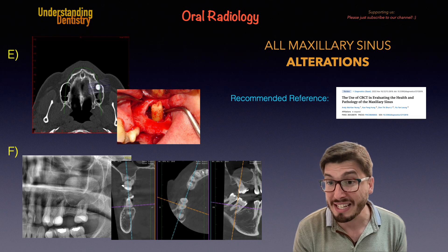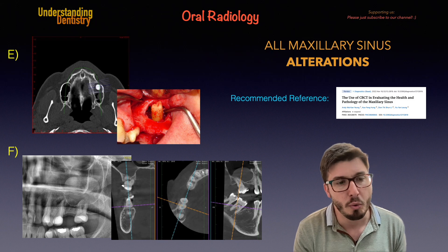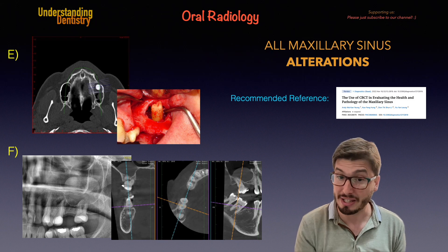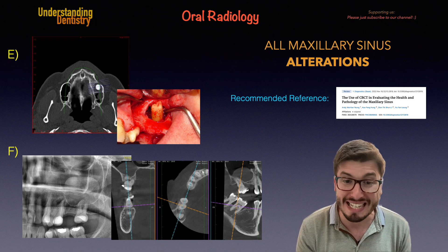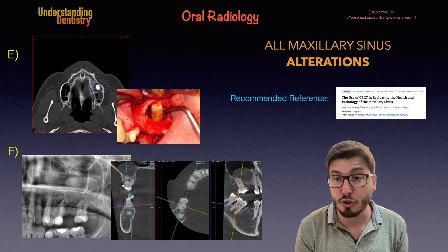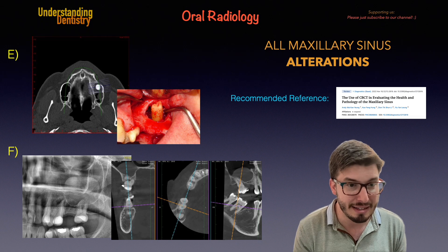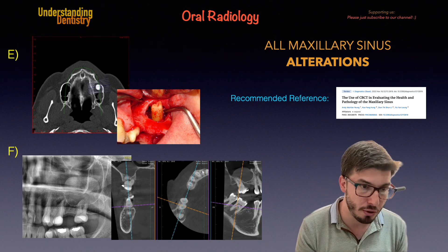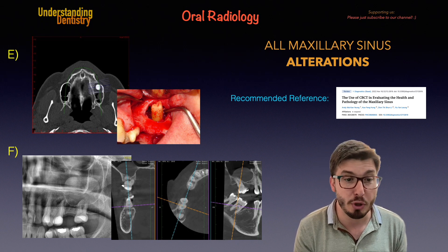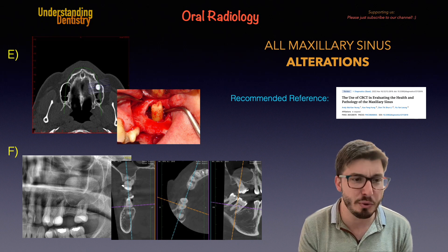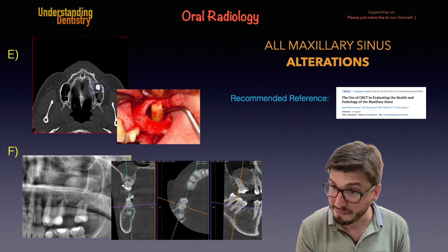Now on the letter F, you are seeing one of the most common alterations of the maxillary sinus, which is the antral pseudocyst — or mucus retention cyst, there are other names — and that's just the dome-shaped lesion. The radiograph is the sole diagnosis required for that; you don't need to do a biopsy. We have a 2D image of one case, and another case on the right side showing an antral pseudocyst in 3D, and you can still confirm the dome-shaped lesion on the CBCT as well.